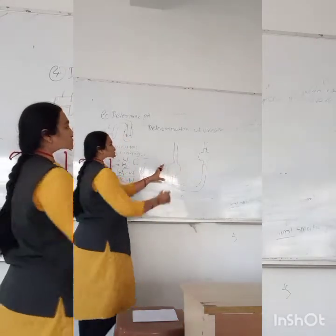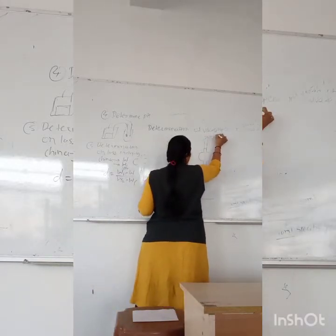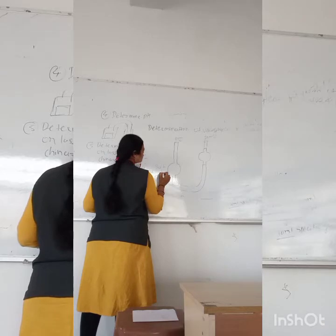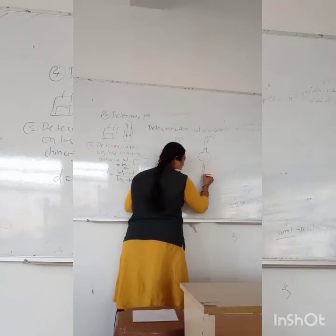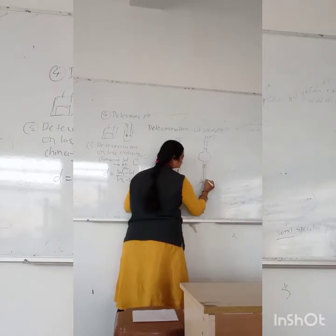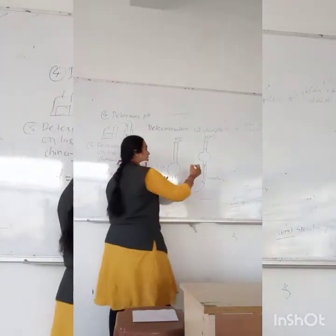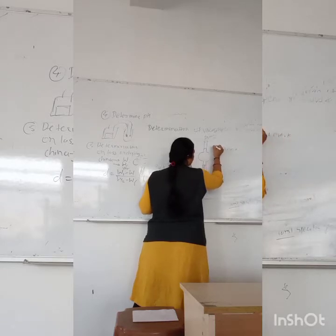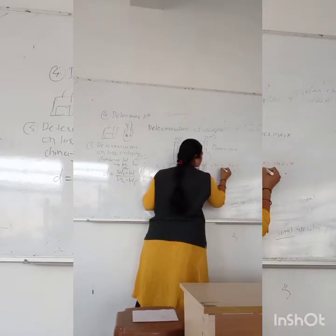On the Ostwald's viscometer, arm one and arm two are identified. Bulb one is on arm one. There is a capillary in the lower section. Two marks are present: the upper mark is denoted as 'A' and the lower mark is denoted as 'B'.